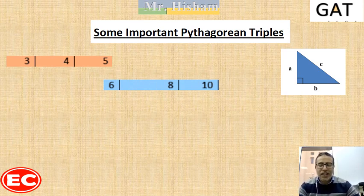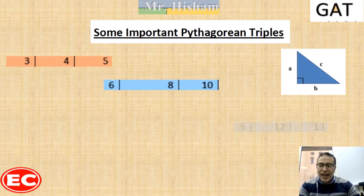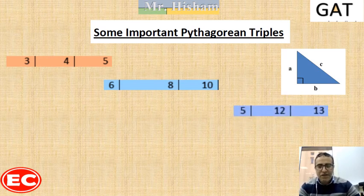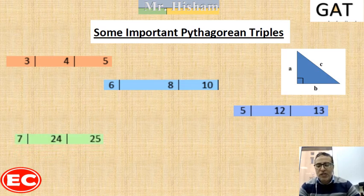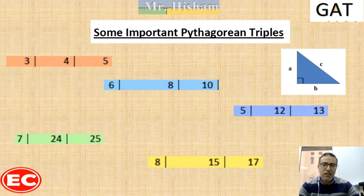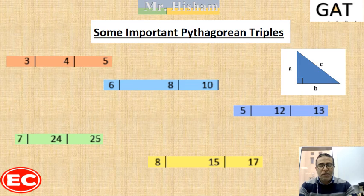The third well-known triple is 5, 12, 13. The fourth is 7, 24, 25. And the last one is 8, 15, 17. My advice is to memorize these values, because if you are solving a geometry exam involving the Pythagorean theorem without using a calculator, they will save you time.